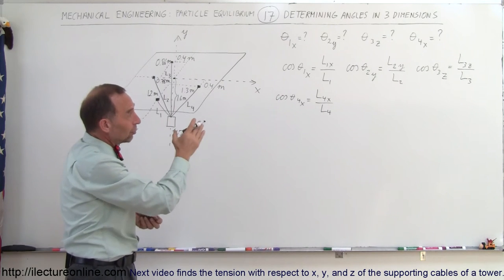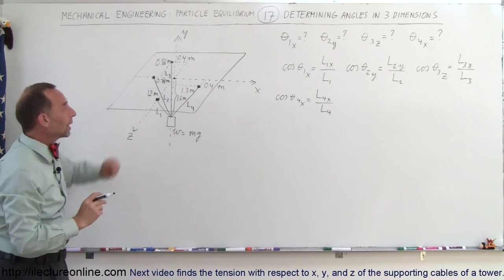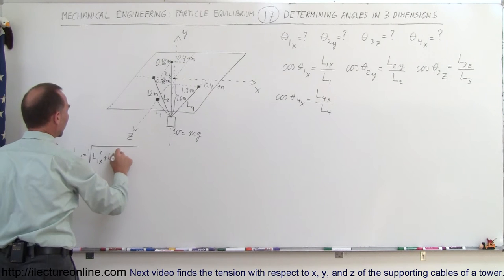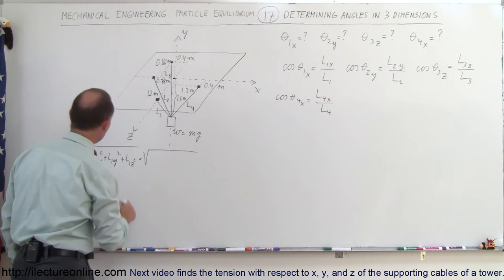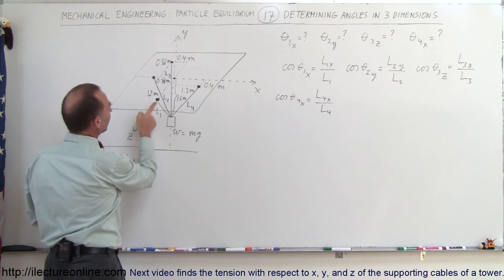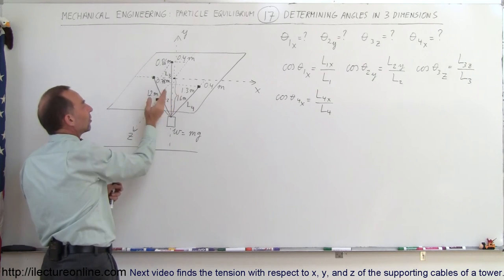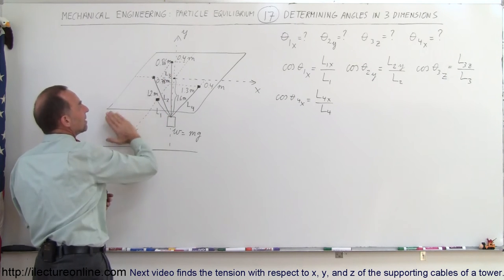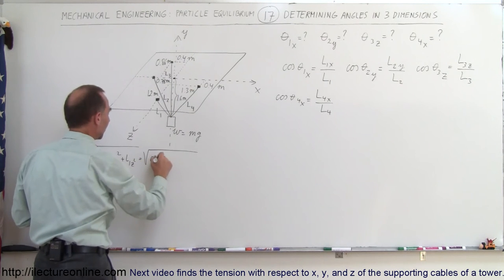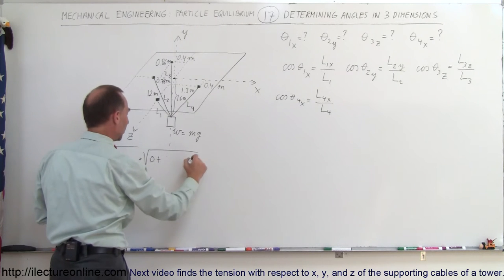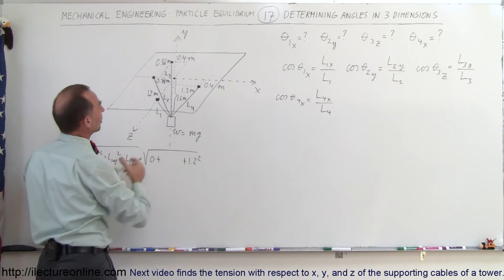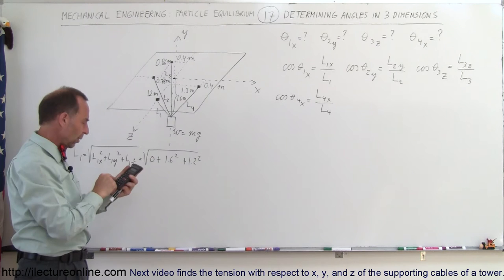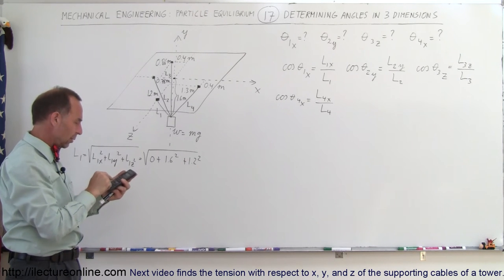We need to find the magnitude of each of the four cables. L1 equals the square root of L1x squared plus L1y squared plus L1z squared. Since L1 is right on the z-axis, the x-component is zero. The z-component is 1.2 meters, and the y-component is 1.6 meters for all cables since the object is 1.6 meters below the plane. So L1 equals the square root of 1.6 squared plus 1.2 squared, which equals 2 meters.